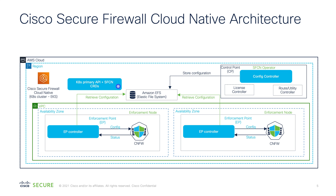Let me double click on this architecture. It has three major components. Starting with the control point — the control point is responsible for config management, license control, and adding routes in your base infrastructure. Whenever a new device is added, the route for the VPN pool on that enforcement point is automatically added by a route and utility controller. Then we have the enforcement point that handles your data plane — consider these containers as your containerized firewalls being managed by the EKS cluster.